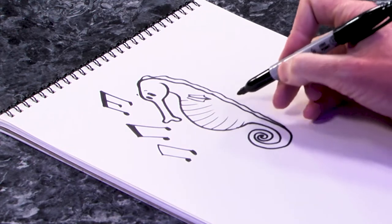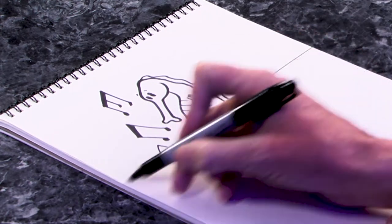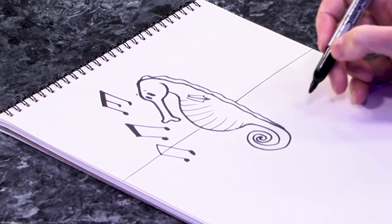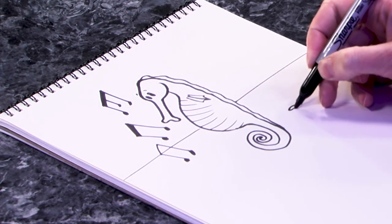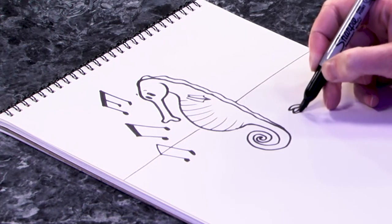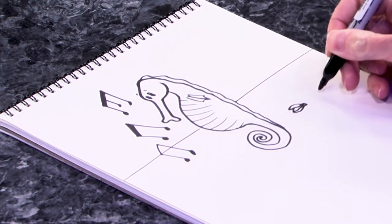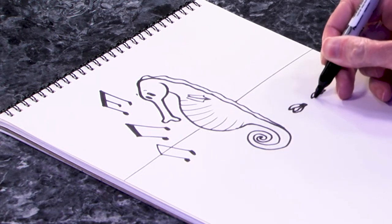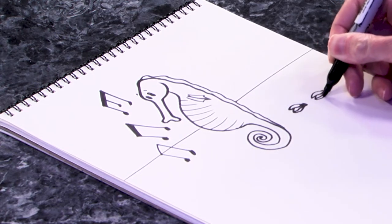And then if we want to put him in an environment we can make some lines across there for the ocean floor. You could put some shells down here. These guys are going to be the castanets providing the percussion maybe for his music.